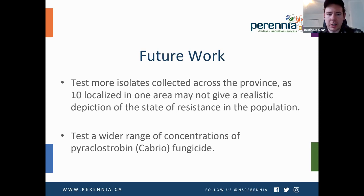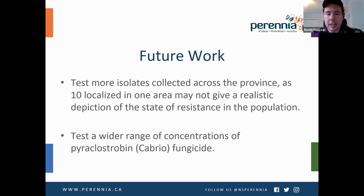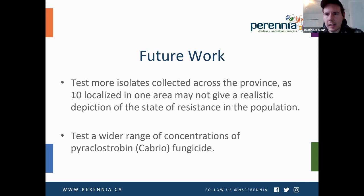All I can say definitively is that out of those 10 isolates, we didn't see any resistance, but it appeared that resistance was beginning to develop. I'd like to test a lot more isolates to flesh that idea out, and also test a wider range of concentrations of pyraclostrobin. It might be that those concentrations are too high, and I would only see complete resistance from the G143A mutation, but wouldn't pick up partial resistance from the F129L mutation because my range of concentrations wasn't low enough.